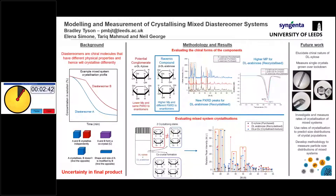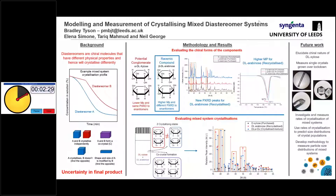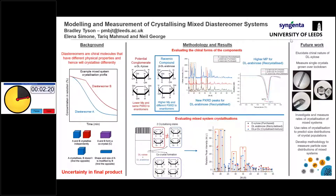If you look on the left, we have an example mixed crystallization profile. We could have crystallization of diastereomer A, which is our wanted product — we've tailored this to crystallize as this. We could also have diastereomer B in solution, which could be present due to the conditions in which it was synthesized. At the end of this crystallization, you can have two different crystals present: one for diastereomer A and one for B.